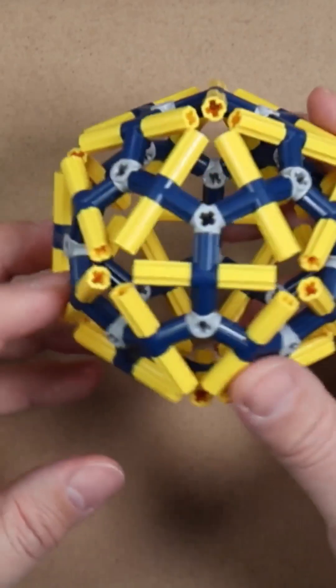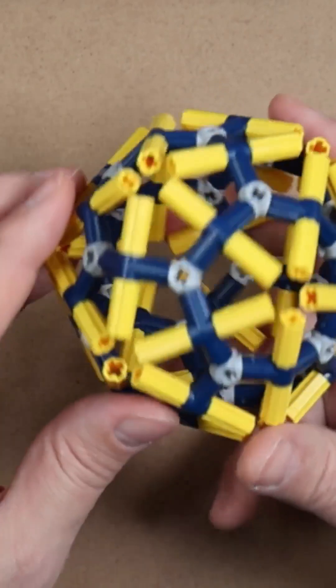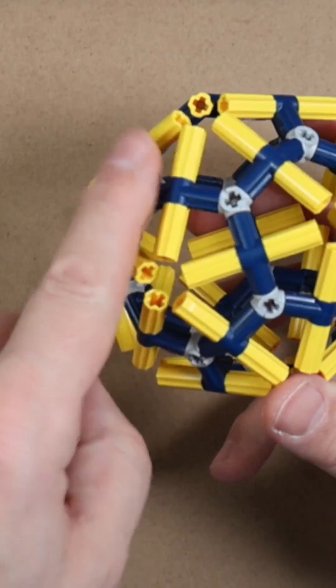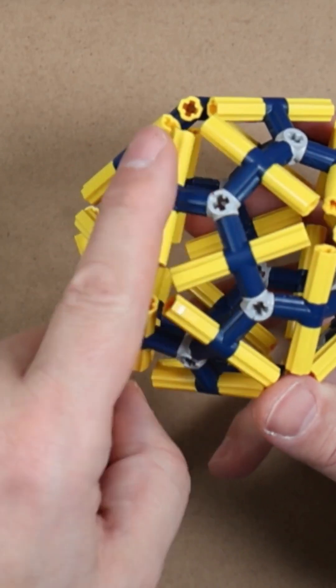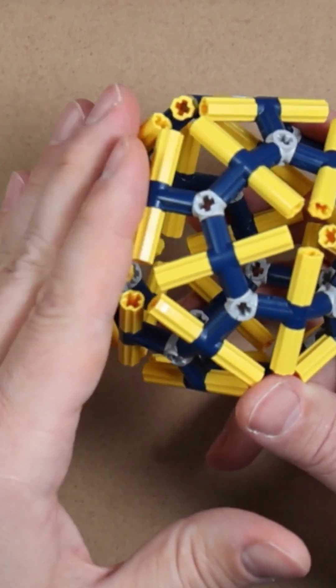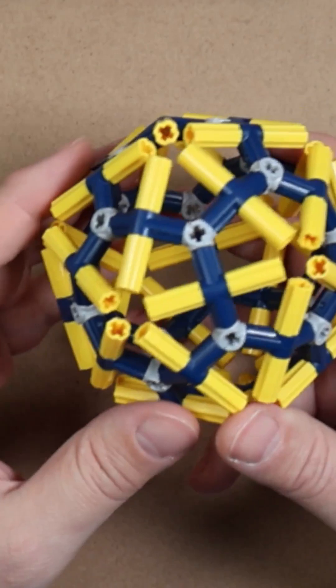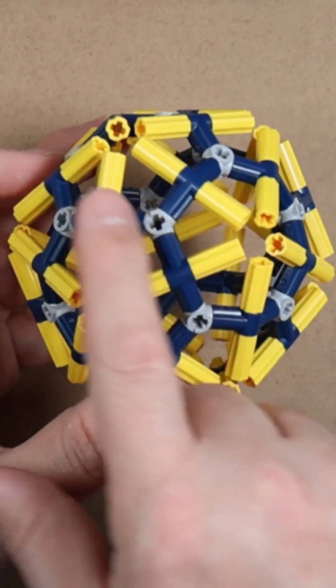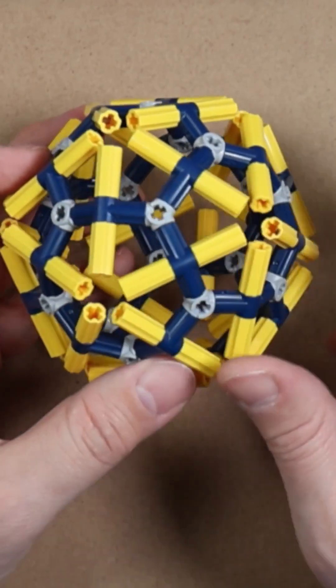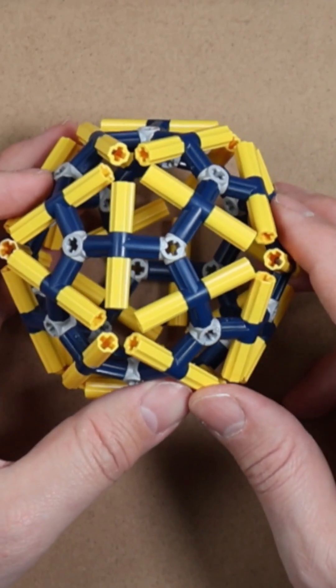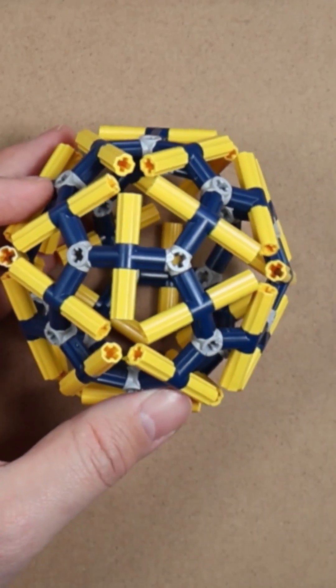It also helps answer a question. Now if you look at the icosahedron, you can look at what's called the dihedral angle. So that is, you have two adjacent triangular faces, and you can say, well what's the angle between those two faces? So for the icosahedron, the dihedral angle is 138 degrees.